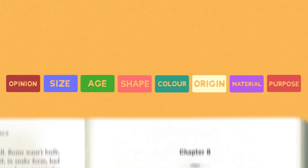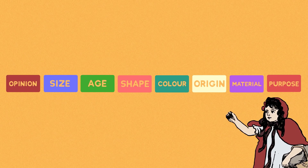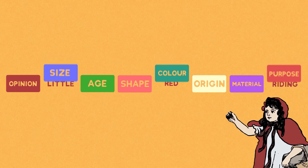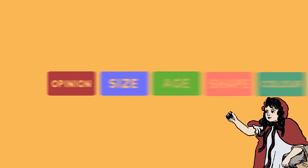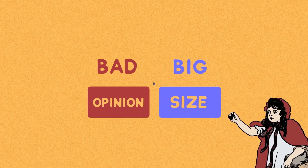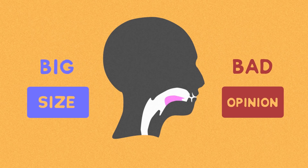There are exceptions though, like Little Red Riding Hood, whose adjectives you'll note are in order — she encountered a big bad wolf, not a bad big wolf as the rule suggests. And this is because ablaut reduplication intervened, and the adjectives were switched so that our tongues could move from the I in big to the A in bad.